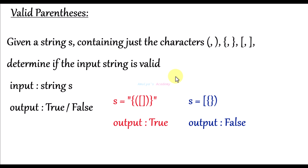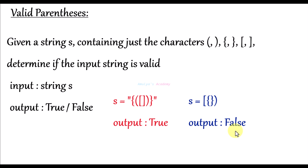Here is the problem statement: given a string S containing just the bracket characters, determine if the input string is valid. The input is a string, and the output is true or false. In this example, this is a valid string so we get output as true. This is an invalid string so we get output as false.